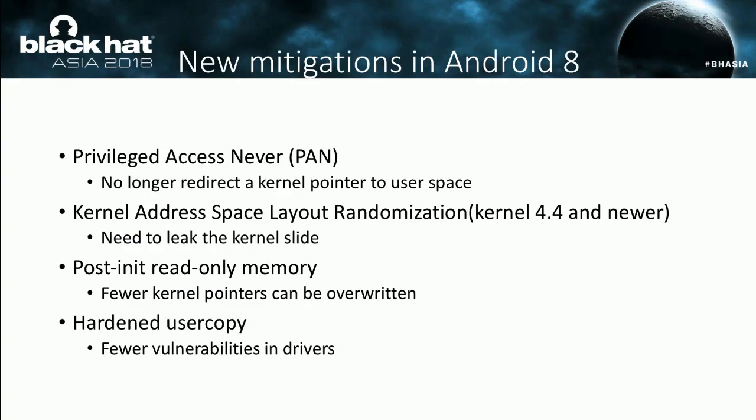There are some new mitigations introduced in Android 8. The first one is Privileged Access Never (PAN). For a non-type confusion vulnerability, redirecting a kernel pointer to user space is a common way to bypass PXN mitigation, but now a new exploitation technique is required. Without the KASLR mitigation, hard-coded addresses of gadgets are enough for a root solution. But now for Android 8 with kernel 4.4 and newer, leaking the kernel slide is required. Post-init read-only memory mitigation reduces writable memory — that means fewer kernel pointers can be overwritten, making exploitation harder. The last mitigation helps developers find and fix bugs during testing, so there will be fewer vulnerabilities in drivers. Android rooting is becoming more and more challenging — but it's still possible.